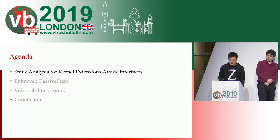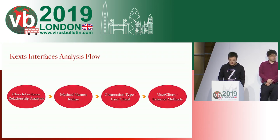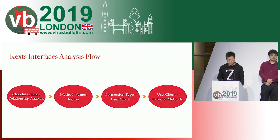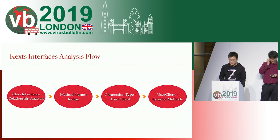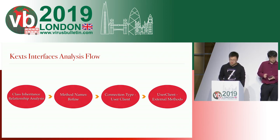Now I will introduce the static analysis for kernel extension first. It includes four steps. We first analyze all drivers and get all classes in their inheritance relationship, then refine the method names based on the inheritance mechanism. Thirdly, we automatically analyze the user clients in each extension and their connection type. Finally, we locate the address of all the external methods for each user client and parse them based on the data structure.